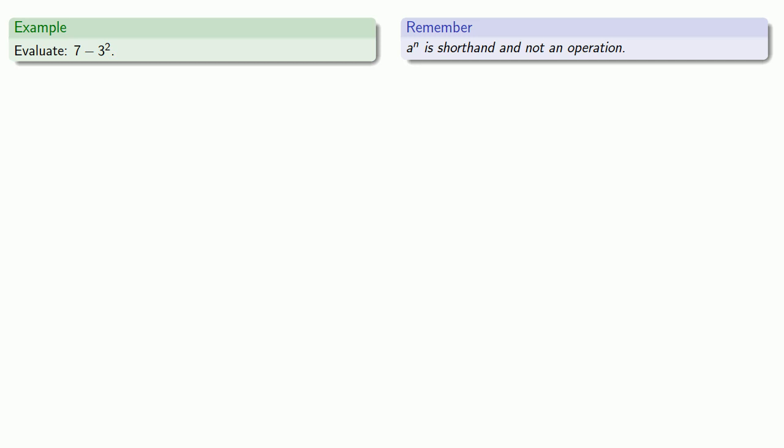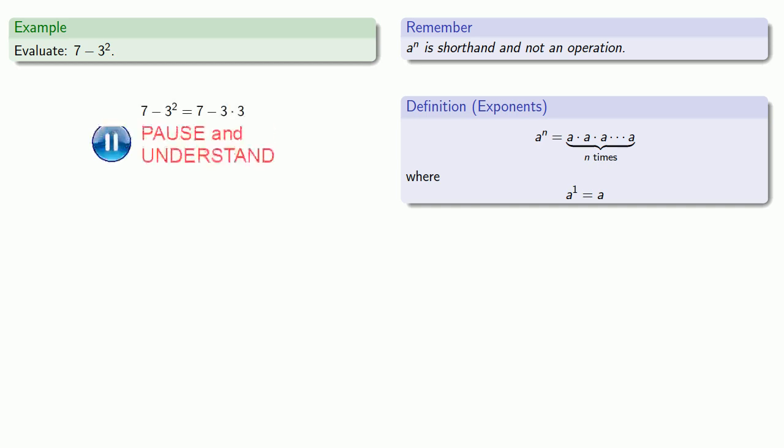So this 7 minus 3 to power 2, we'll pull in our definition for exponents. 3 to power 2 is the same thing as 3 times 3. And order of operations says do the multiplication first. That's 7 minus 9. And subtraction of integers, 7 minus 9, gives us negative 2.